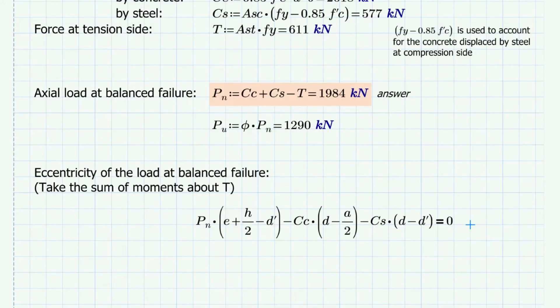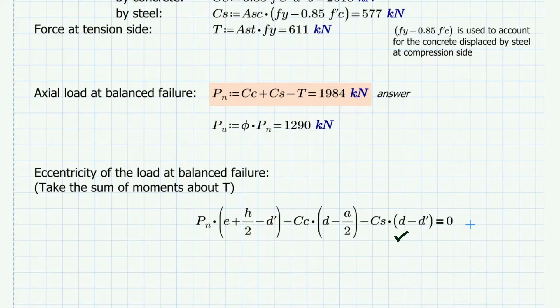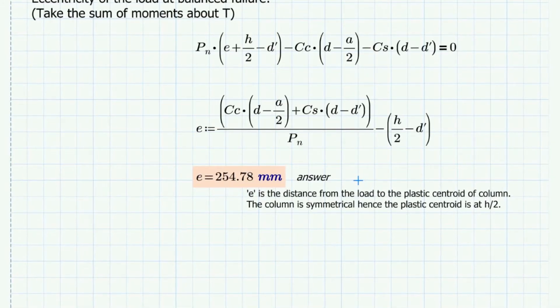To calculate the eccentricity, we take the summation of moments about T. Pn times the moment arm, which is equal to eccentricity plus h over 2 minus d prime, minus the compression force by concrete times the moment arm d minus a over 2, minus the compression force by steel times the moment arm d minus d prime. Using this equation, we can get the value of the eccentricity, which is equal to 255 mm.